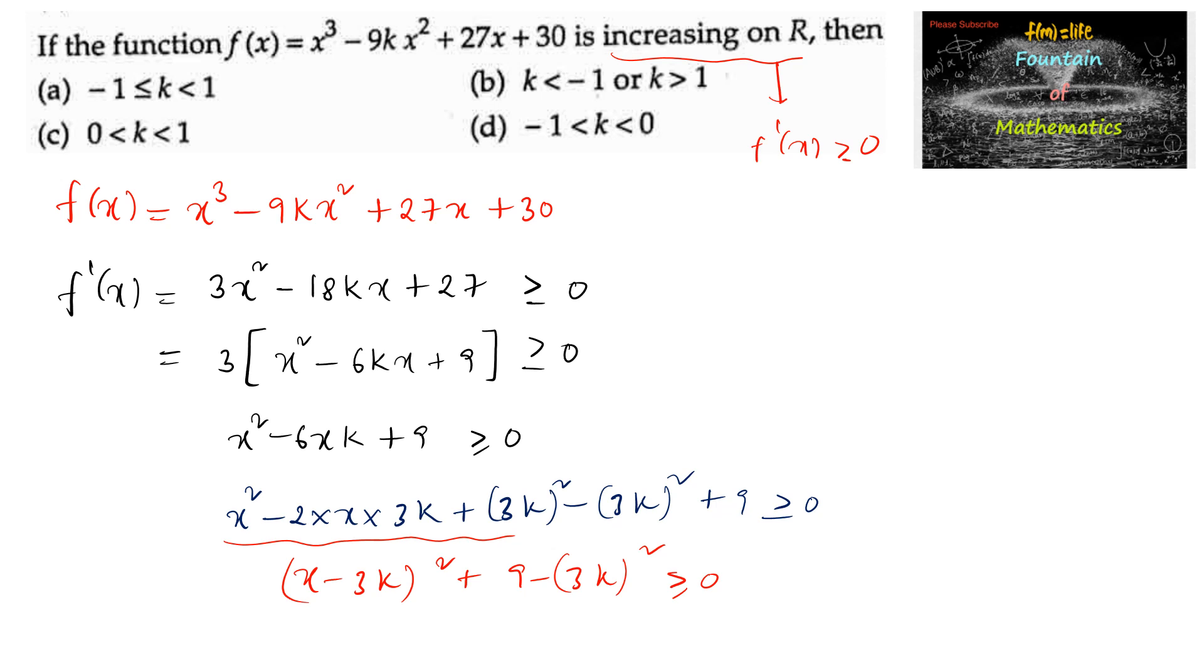Since (x - 3k)² is always ≥ 0, the term 9 - (3k)² must be positive. So we can write 9 - (3k)² > 0, or (3k)² - 9 < 0.